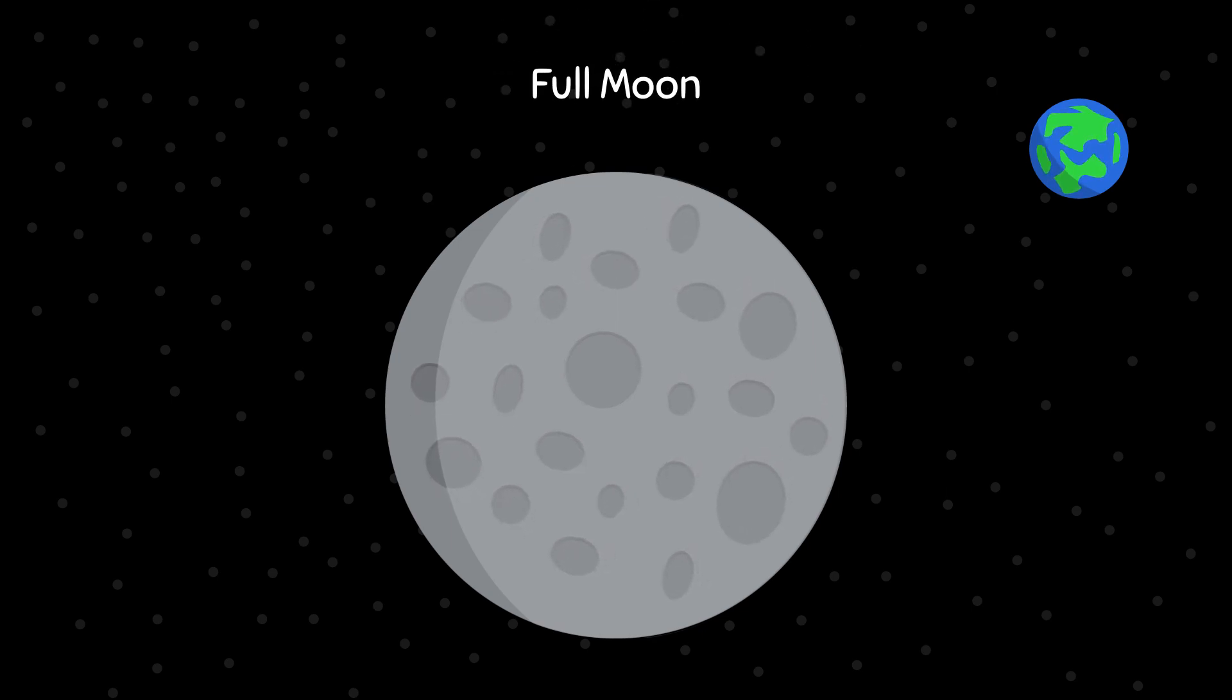The phase Full Moon means the Moon is 100% lit. The phase Waxing Gibbous means the left side of the Moon is 99 to 51% lit.